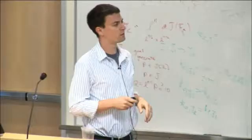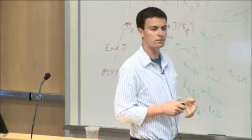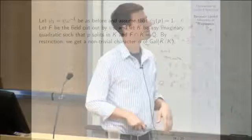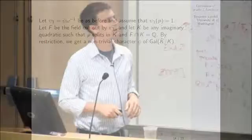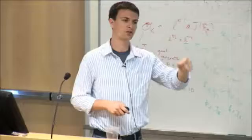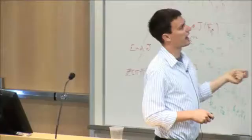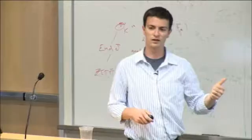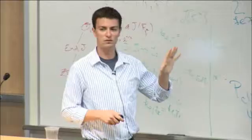Both κ and λ take values in 1+pZ_p, so it makes sense to raise them to any p-adic power. As a reminder, ψ₁ = ψω⁻¹, and we're in the case ψ₁(p)=1 — the case where the Kubota-Leopold p-adic L-function vanishes. We let F be the field cut out by ψ₁, and K will be any imaginary quadratic field where p splits, disjoint from F. This disjointness is easy to arrange, and it means that restricting ψ₁ to Gal(K̄/K) gives a character φ that looks exactly like ψ₁.